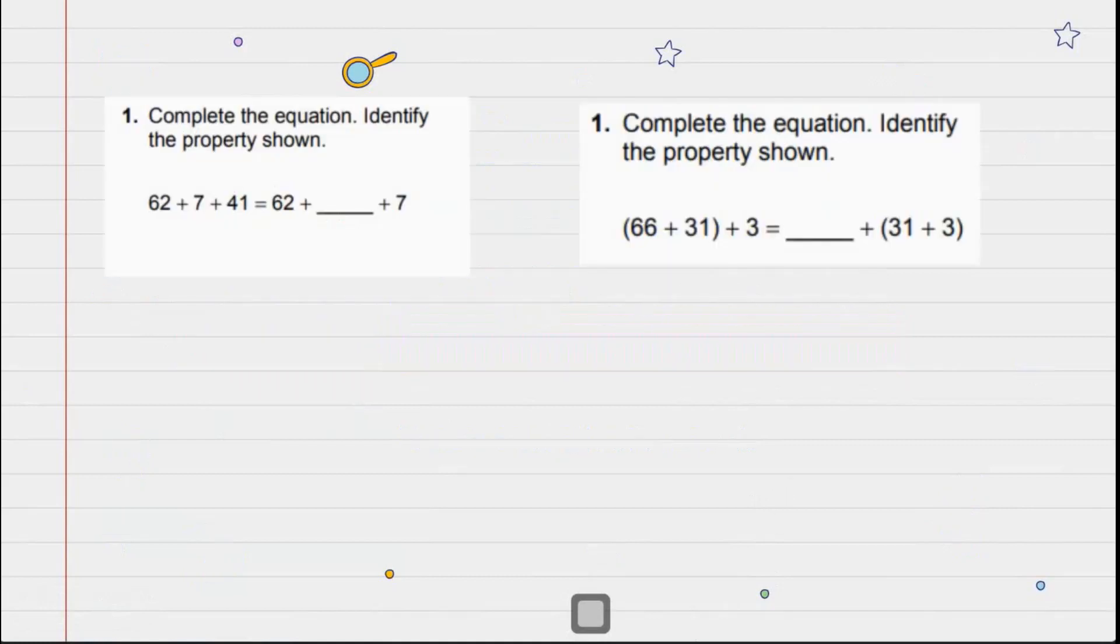Number 1 says to complete the equation and then identify the property shown. So let's see, we have 62 + 7 + 41, then an equal sign. That equal sign means both sides need to be equivalent. So I have 62, I have 7. What's missing? Well, 41 is missing. And because we only moved the numbers around, what property is associated with just moving the numbers around and it does not change the value? Well, the commutative property.